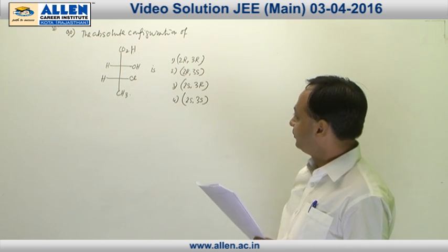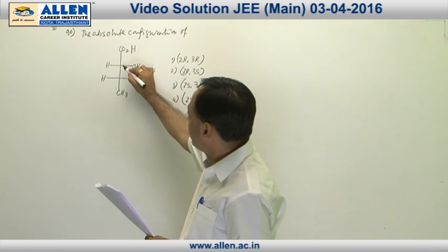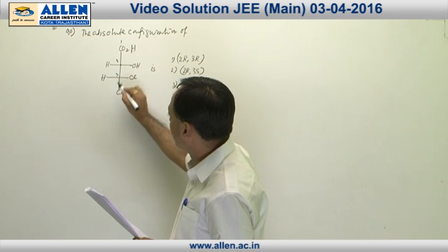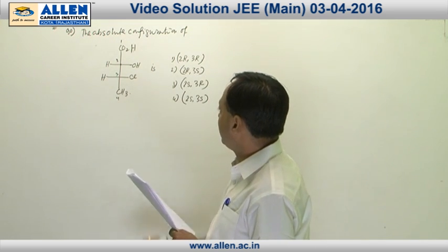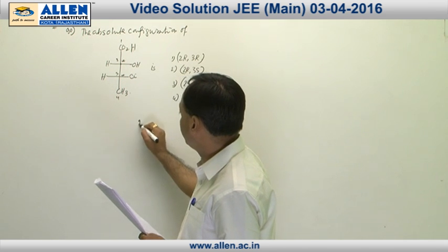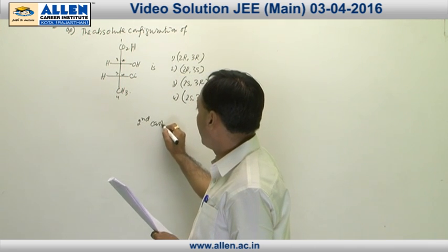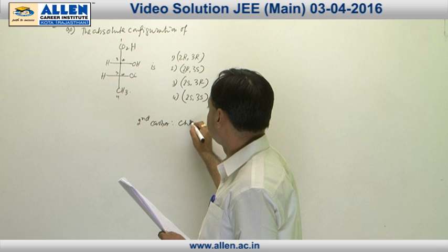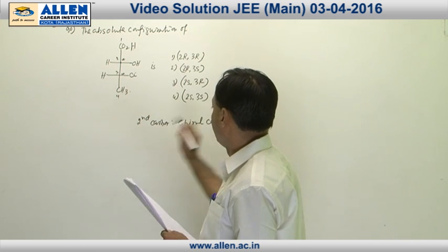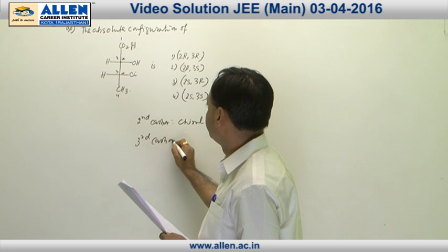Let us start. First, numbering of this compound — it is observed that the second carbon and third carbon have a chiral center: second carbon and third carbon.